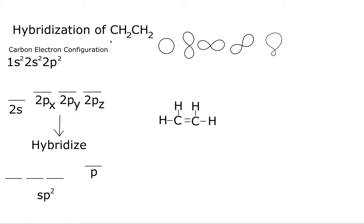In this video I'll be explaining the hybridization of CH2CH2. The quick shortcut way of doing this doesn't really give us an idea of why we're doing it, but the shortcut is to count the number of atoms surrounding our central atom.